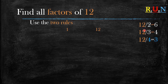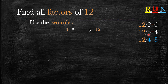So we start with 2. What is 12 divided by 2? We get 6. Now since 6 is a whole number with no remainder, we write the 2 on this side and we write the 6 on the other side. Then we move on. What is 12 divided by 3? It equals 4. So given that 4 is a whole number, we write the 3 on this side and we write the 4 on the other side.